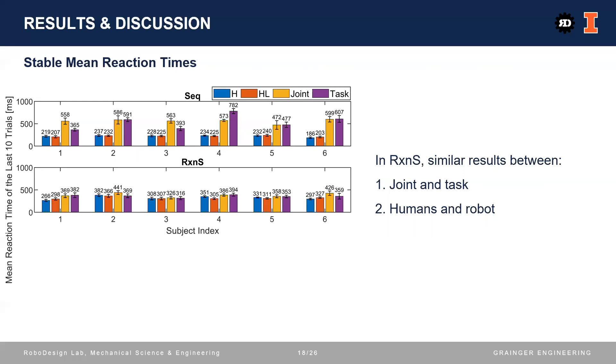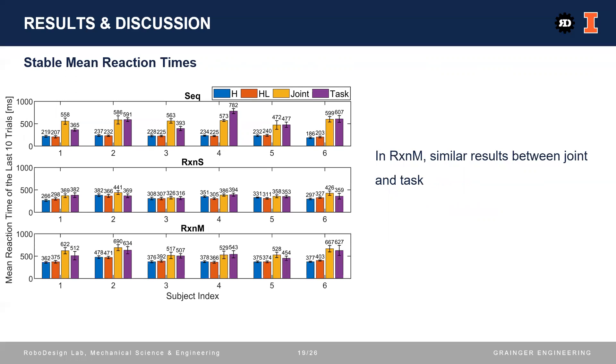For single-target reaction tests, the results were not only similar between joint and task-based mappings, but also similar between the humans and the robot. For multi-target reaction tests, the robot performed more slowly than the humans, but joint and task-based mappings also yielded similar reaction times.